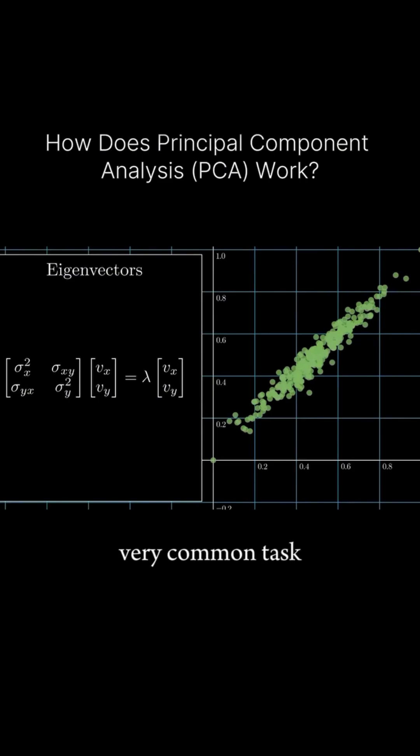Solving for these vectors is a very common task in linear algebra and can be done using various methods. Once we have the eigenvectors, we sort them in descending order by their eigenvalues. The eigenvectors with the largest eigenvalues are our principal components.